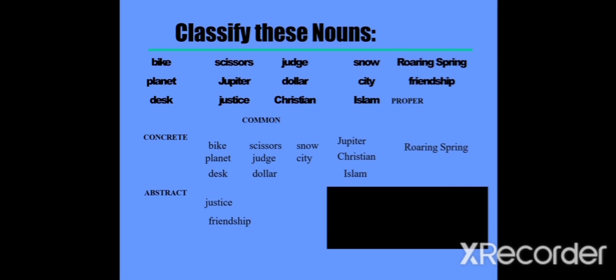Now for proper nouns: 'Jupiter' — here you are given a specific, special name to that planet, so it is a proper noun. Christian, Islam, Roaring Spring — you are given a specific name to those things or persons, so they are proper nouns. Justice and friendship are abstract nouns — you can't see them physically, you can't touch them, but you can feel them. They are thoughts and ideas, so those are abstract nouns.